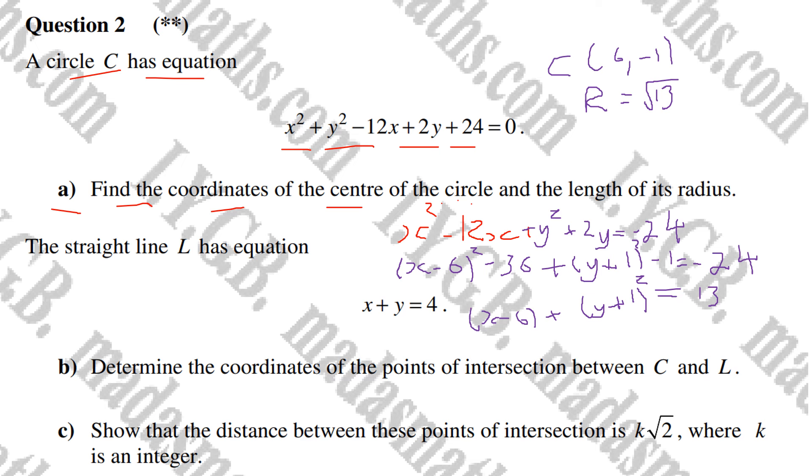Next part: A straight line L has equation x plus y equals 4. Part b: determine the coordinates of the points of intersection between C and L. I'm going to rearrange this to make y the subject, so y equals 4 minus x.